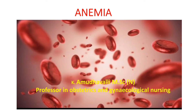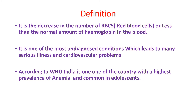Hi viewers. In today's video we will discuss about anemia, which is very common among adolescent girls and pregnant mothers. It is the decrease in the number of RBCs, i.e. red blood cells, or less than the normal amount of hemoglobin in the blood. It is one of the most undiagnosed conditions which leads to many serious illnesses and cardiovascular problems. According to WHO, India is one of the countries with the highest prevalence of anemia, and it is common in adolescent girls.